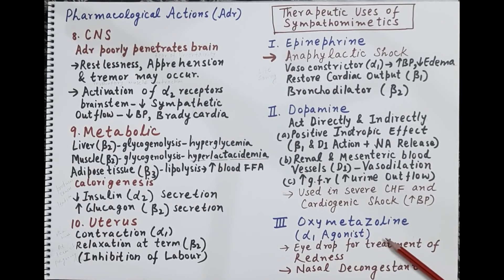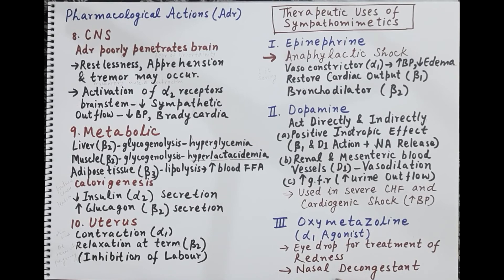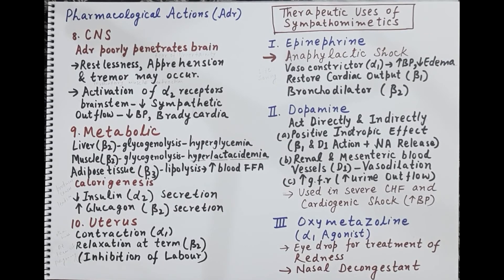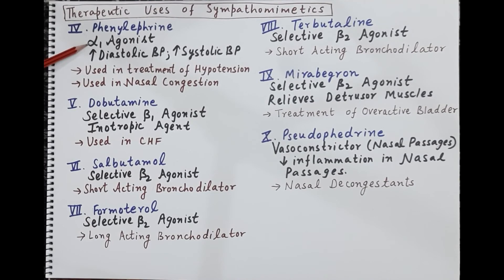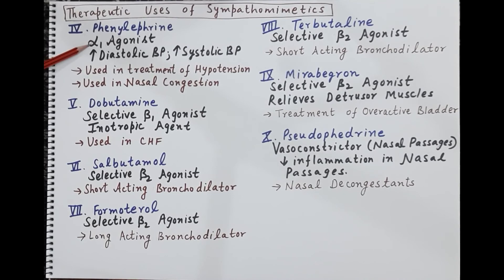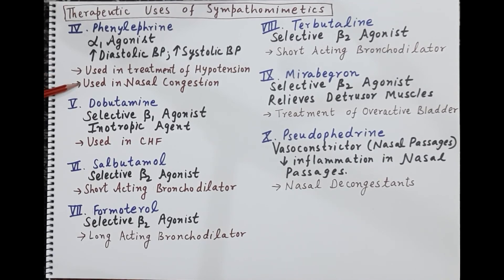Oxymetazoline is an alpha 1 agonist used for treatment of redness of the eye. Since it is an alpha 1 agonist, it causes vasoconstriction of blood vessels in the nose and is also used as a nasal decongestant. Phenylephrine is also an alpha 1 agonist — it causes vasoconstriction, increasing peripheral resistance and raising both diastolic and systolic blood pressure, making it useful in treatment of hypotension. It also causes constriction of nasal blood vessels and is used as a nasal decongestant.